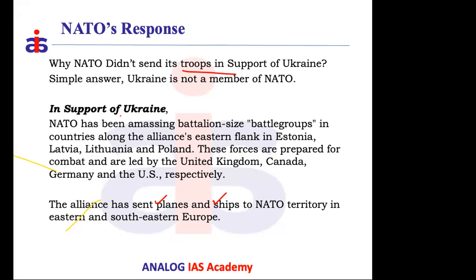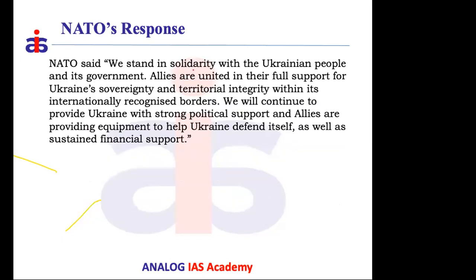As a deterrent against further Russian escalation, NATO deployed large military battalions in member countries bordering Russia — acting as a warning against spreading the war into Europe. NATO also clarified the nature of its support: military equipment like planes and warships, plus financial assistance, since Ukraine's war-affected eastern regions have halted normal economic activity.